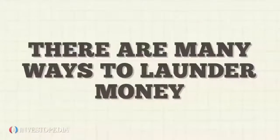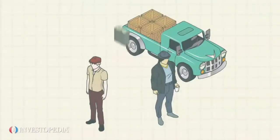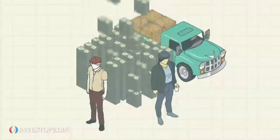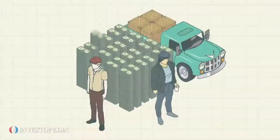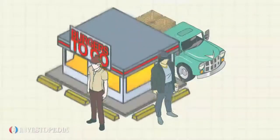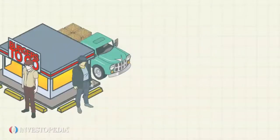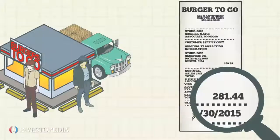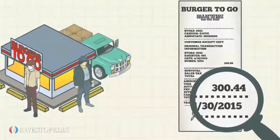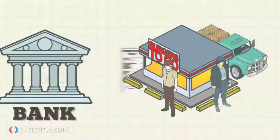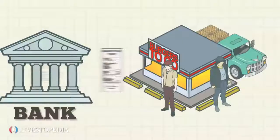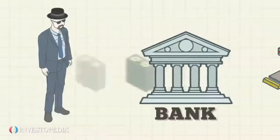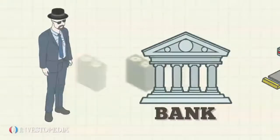There are many ways to launder money. One of the most common is to launder the money through a legitimate cash-based business owned by the criminal organization. For instance, if the organization owns a restaurant, it might inflate the daily cash receipts to funnel its illegal cash through the restaurant and into the bank. Then they can distribute the funds to the owners out of the restaurant's bank account.